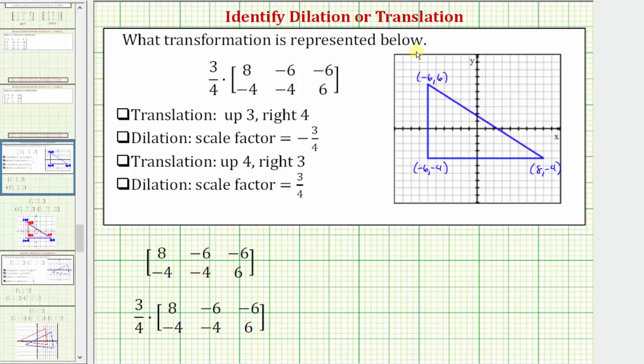We're asked what type of transformation is represented below. Notice here we have scalar multiplication. We have three-fourths times a two-by-three matrix.